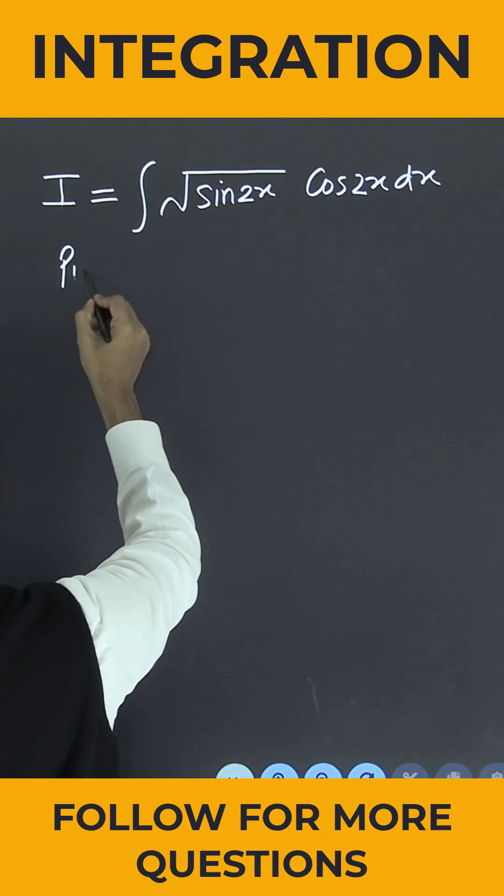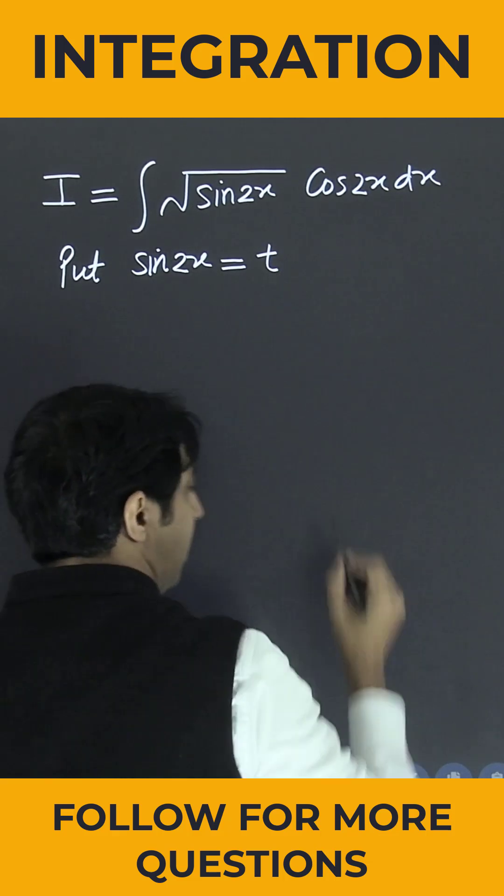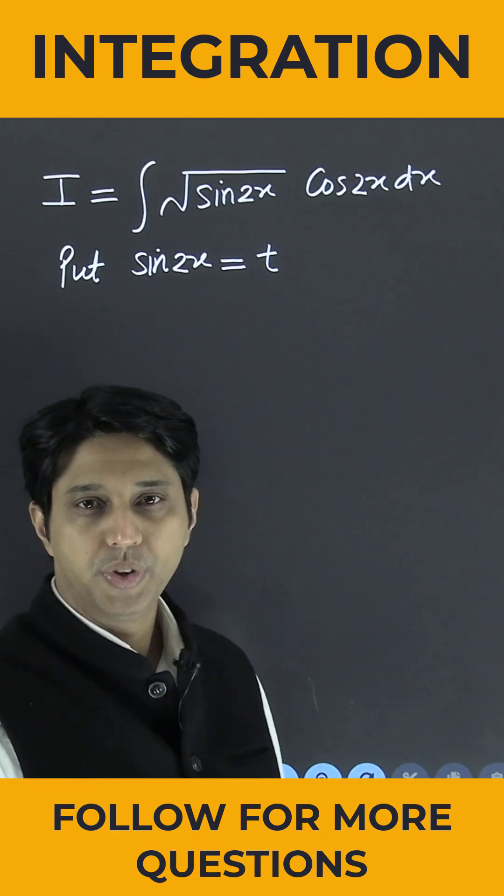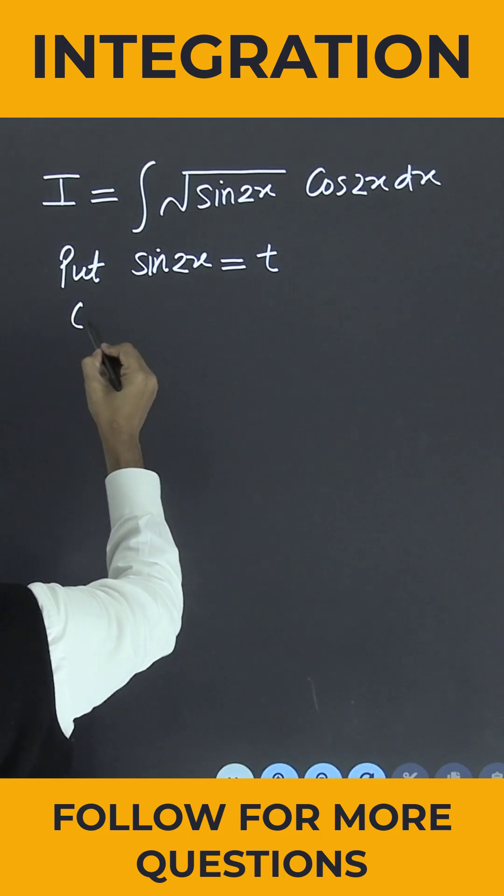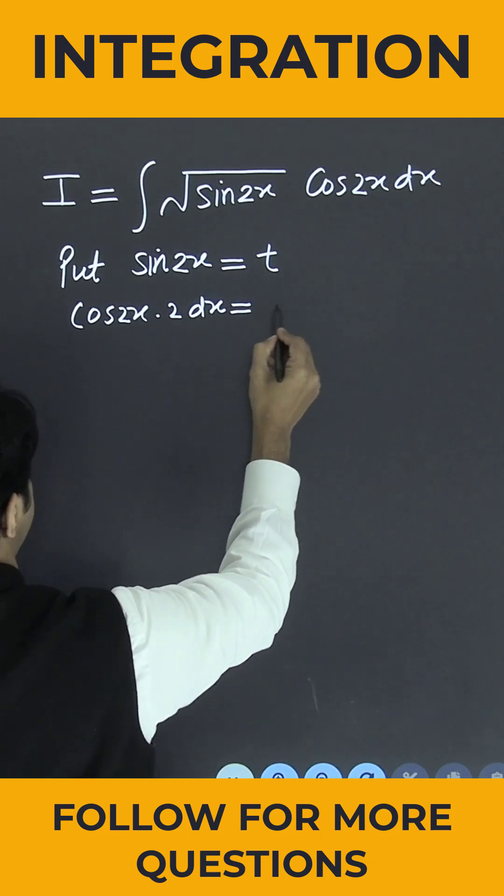Now simply put sin 2x is equal to small t, differentiating both sides with respect to x.